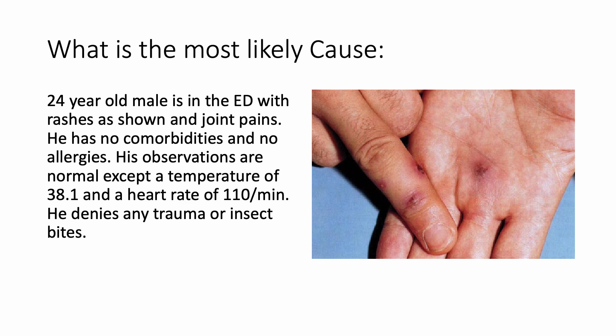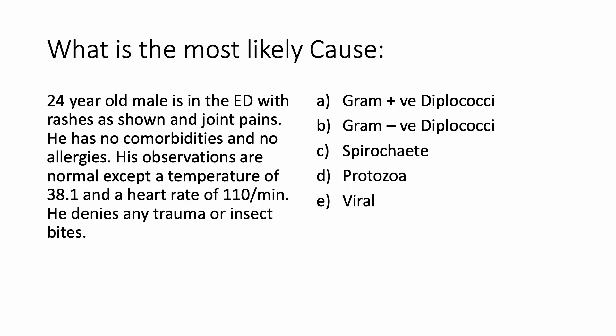What is the most likely cause? A 24-year-old male is in the emergency department with rashes as shown and joint pains. He has no comorbidities and no allergies. His observations are normal except for a temperature of 38.1 and a heart rate of 110 per minute. He denies any trauma or insect bites. The options given are: gram-positive diplococci, gram-negative diplococci, spirochete, protozoa, or viral.